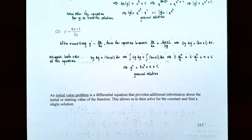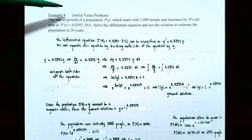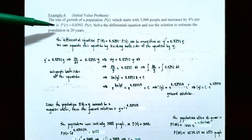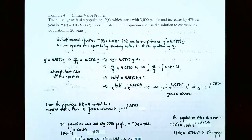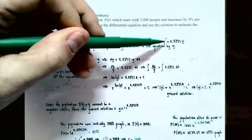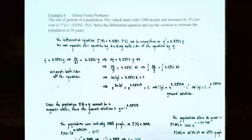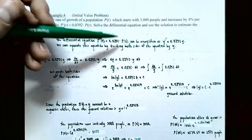An initial value problem is a differential equation that provides additional information about an initial or starting value of the function. If we know the initial value, we can find the constant of integration and obtain a particular solution rather than a general solution. Example four: the rate of growth of a population P of T, which starts with 3,000 people and increases by 4% per year, is given by P prime of T equals 0.0392 times P of T. We rewrite this as y prime equals 0.0392y.